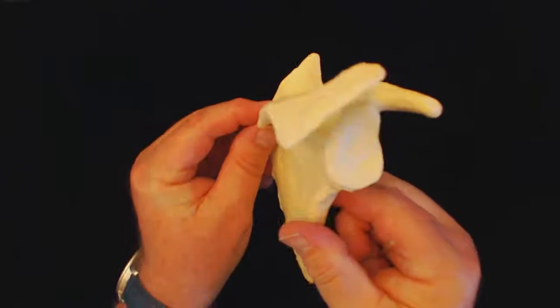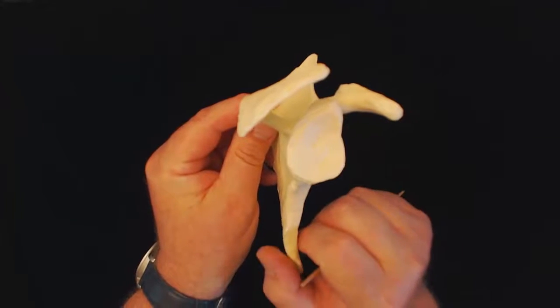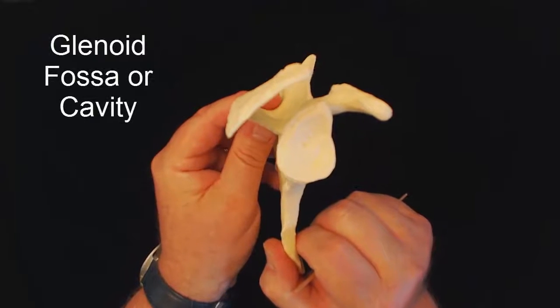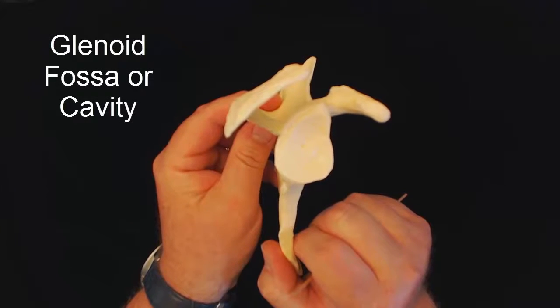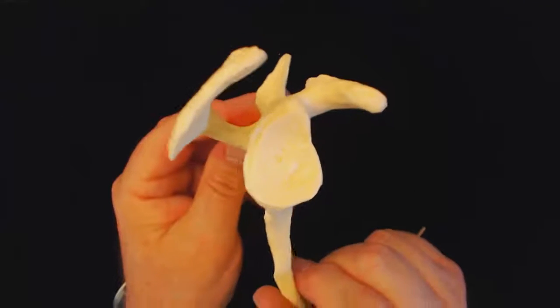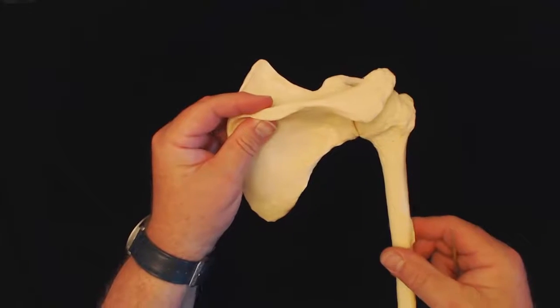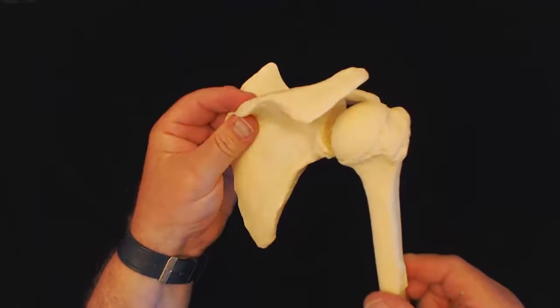Now as we start to turn it toward us, we're going to see this area here that is called the glenoid fossa. Glenoid fossa can also be called the glenoid cavity. And what fits in the glenoid cavity is going to be the humerus.